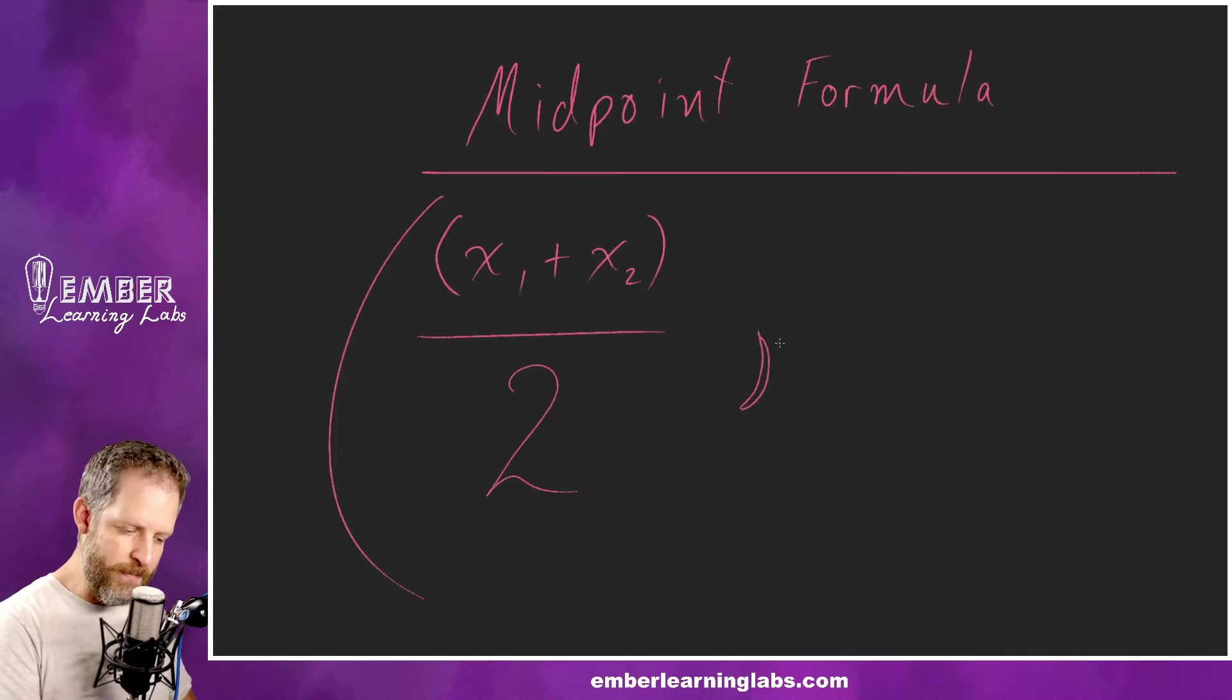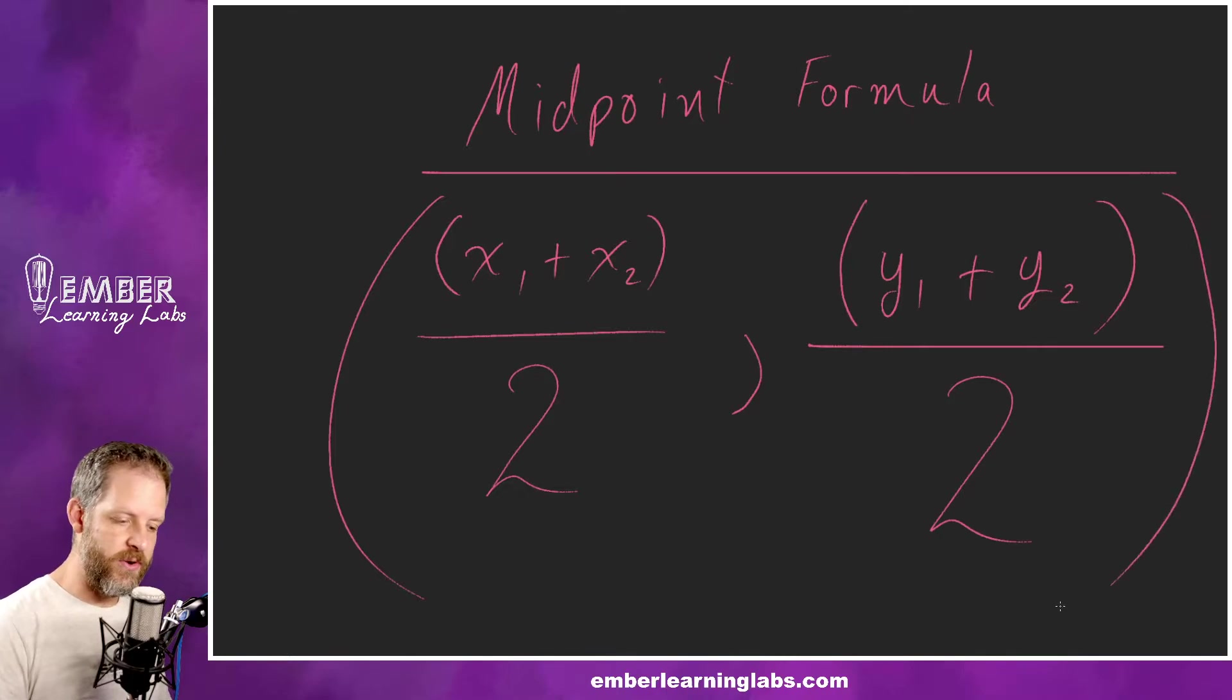And then for the y part, looks like some weird banana or something, just some big comma. For the y part you could probably guess at this point we take y1 and add it to y2 and we divide that by two.